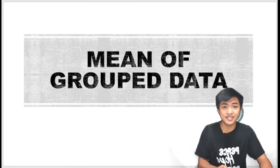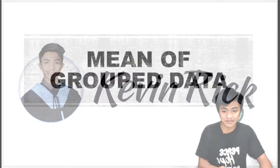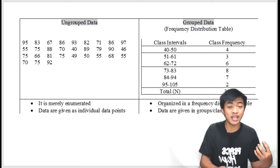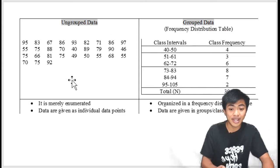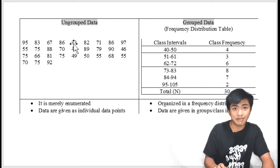But what is grouped data? Okay, you see, in my previous video, I talked about the mean, median, and mode of ungrouped data. The ungrouped data are merely enumerated and given as individual data points. So, it's just like raw data.